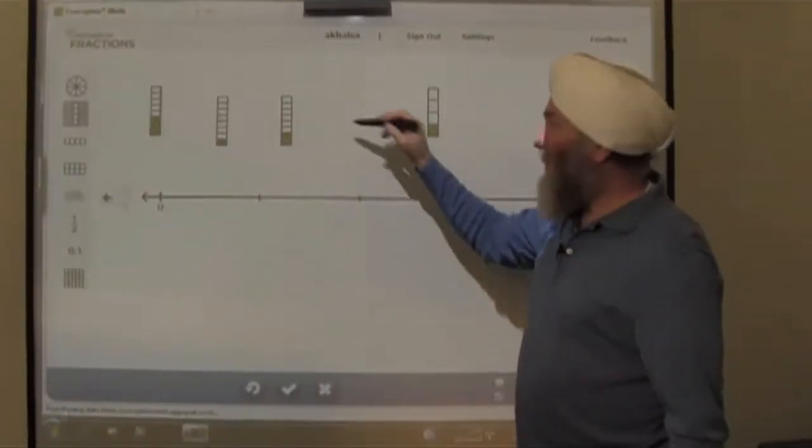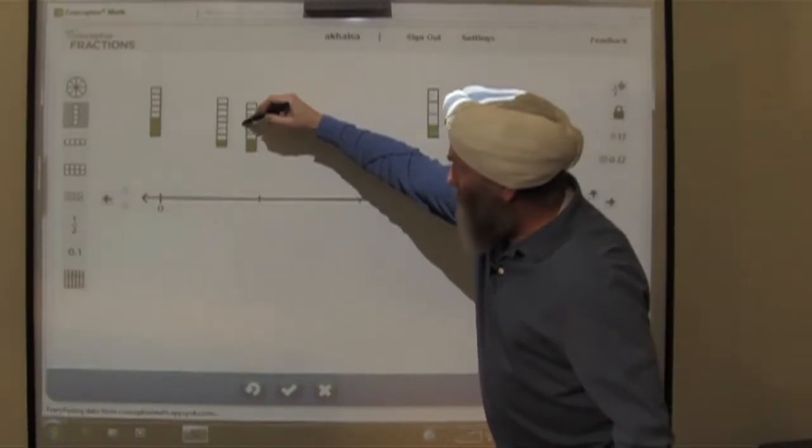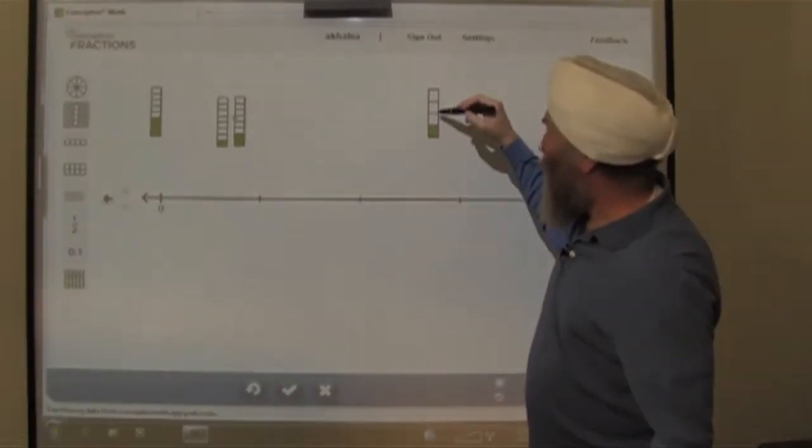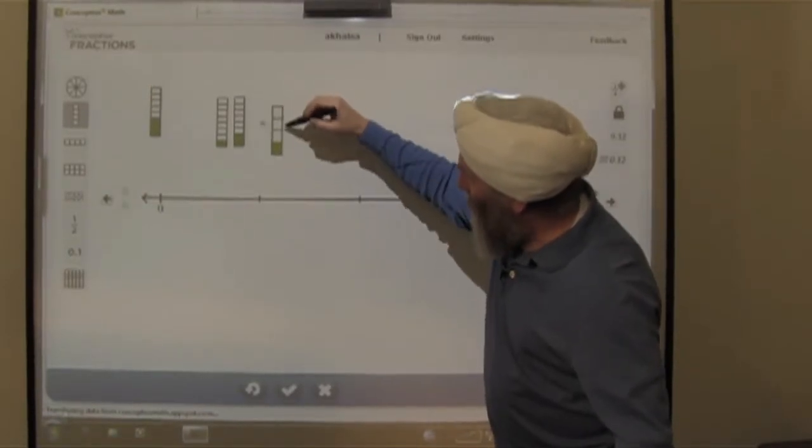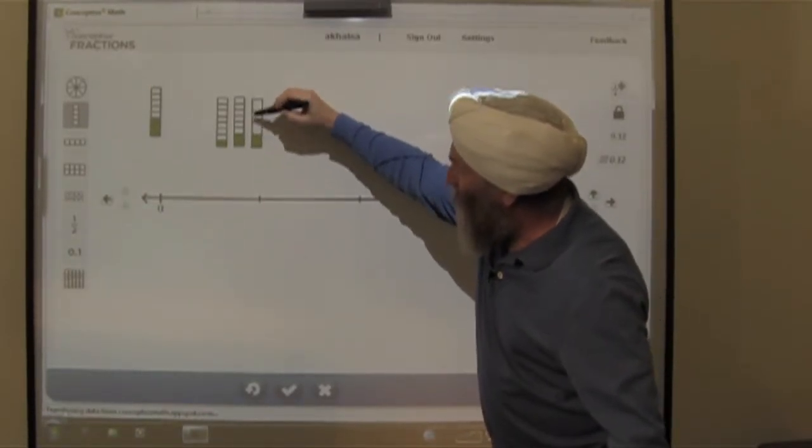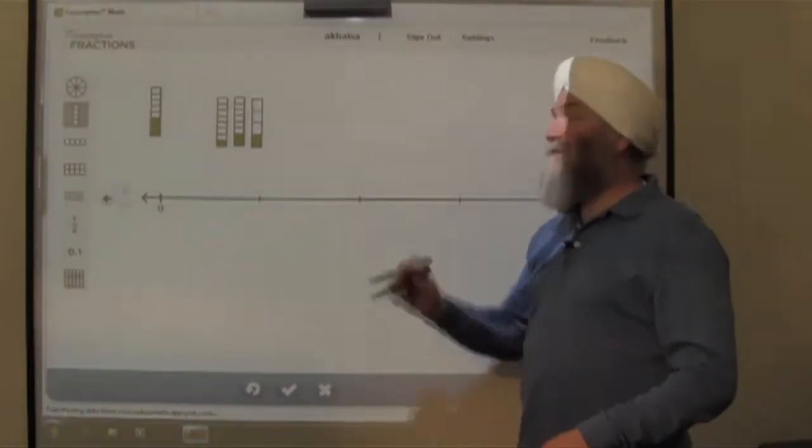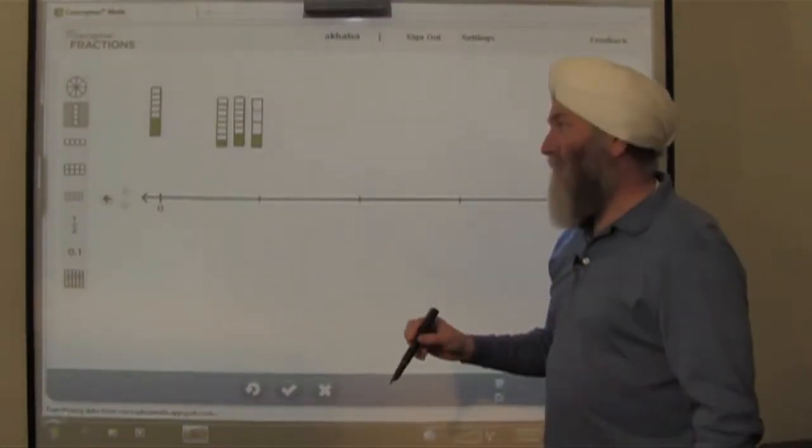And we can see that 2 eighths is twice the size of 1 eighth, and it's the same size as, come on, move over there, as 1 fourth. So 1 fourth and 2 eighths are the same, and 1 eighth is half of that amount.